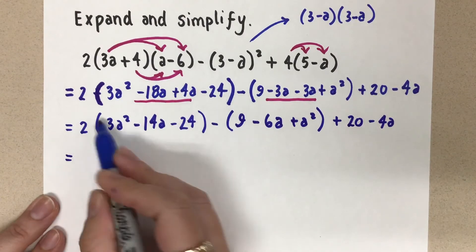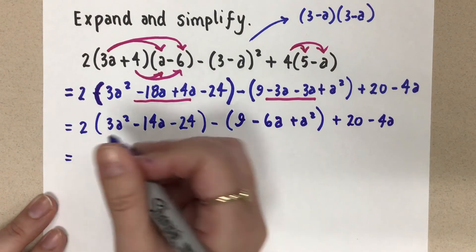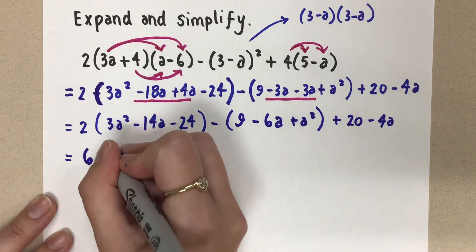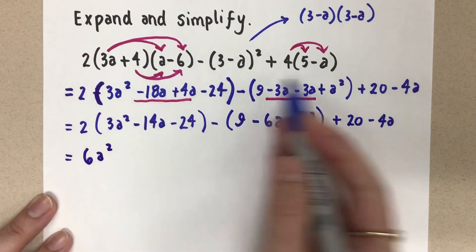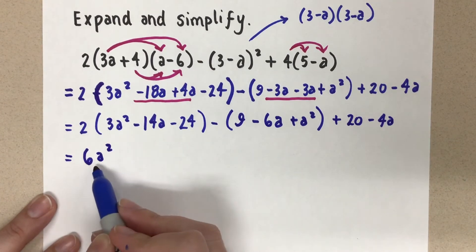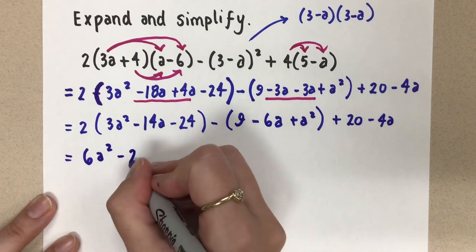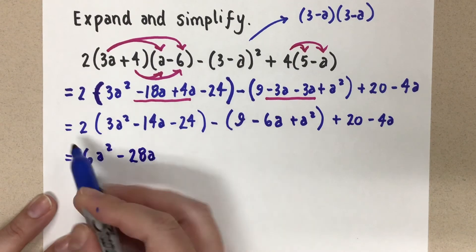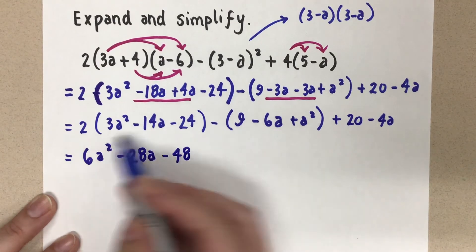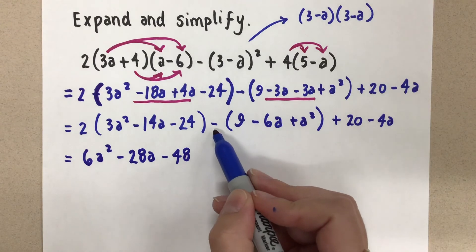Now let's distribute the 2 here and the negative 1 here. I'm going kind of fast here because I know that this is stuff that we already know. We're kind of just reviewing how to work with these longer polynomials. So when I distribute, 2 times 3 gives me 6. And then I have a squared. 2 times negative 14 is negative 28a. And 2 times negative 24 is negative 48. Good. And notice the brackets now are gone because we've distributed.